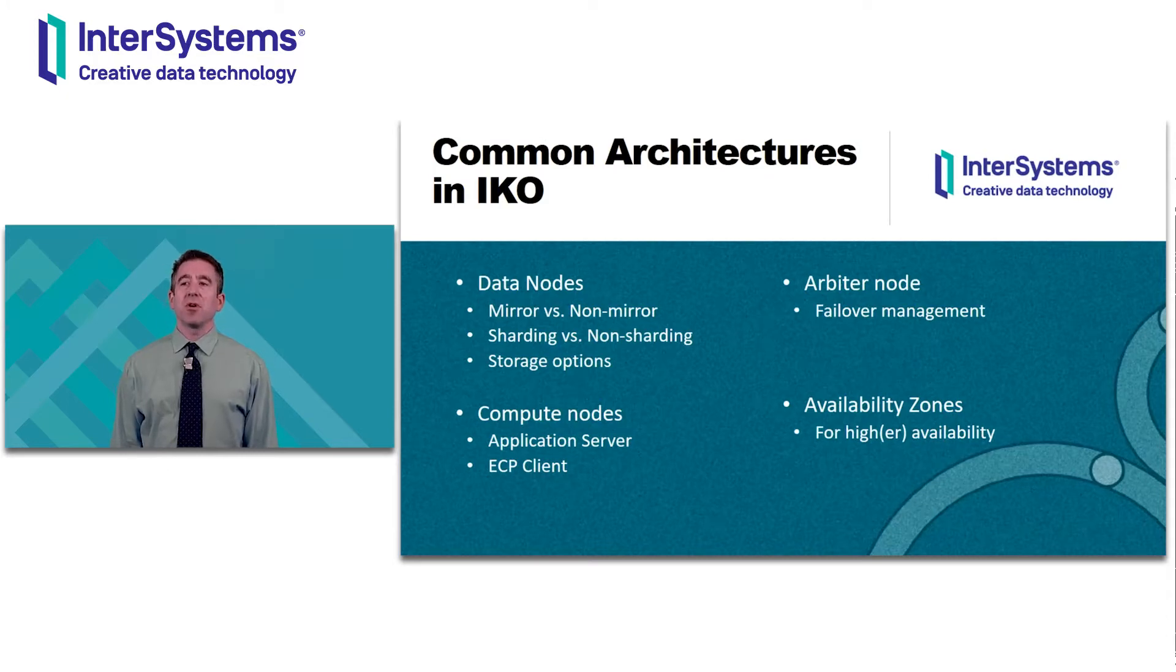Let's dive a little deeper into some of the architecture choices one has when deploying an IRIS cluster. One can specify the number of IRIS instances, whether to employ mirroring, sharding, or a combination of the two, the amount and kind of storage which includes size and IOPS, whether to allocate an arbiter node, and how to distribute IRIS instances across availability zones. There are a lot of other parameters which can be configured, but these are easily observed and play into the upgrade process.